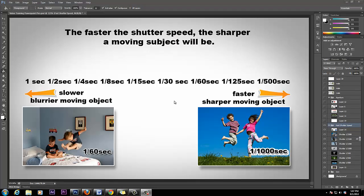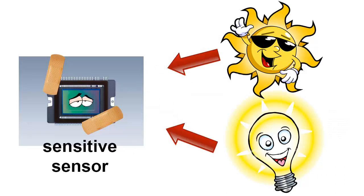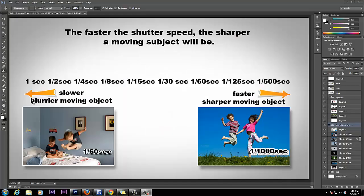Shutter speed allows light inside the camera at a specific amount of time. You adjust your shutter speed based on the amount of light and how long that light hits your sensor. As a rule, the slower your shutter speed, the more blurry objects are going to be — like a baby jumping in the air will appear blurry. The faster your shutter speed, as a rule of thumb, the image is going to be sharper — you can actually see the little lines in a child's hair and it's not blurry.